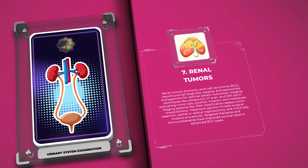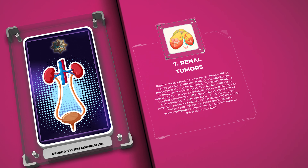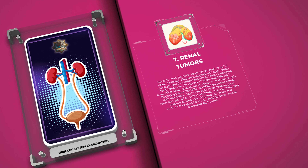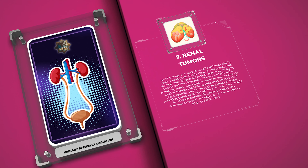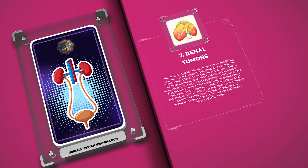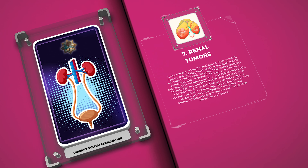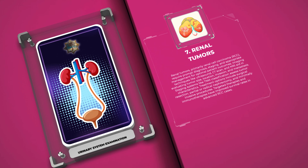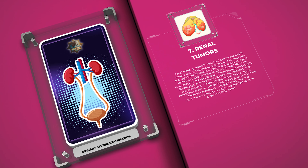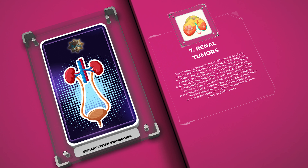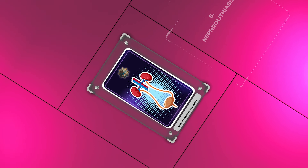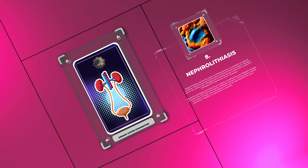Renal tumors, primarily renal cell carcinoma (RCC), require prompt diagnosis, staging, and appropriate management for optimal patient outcomes. Imaging techniques like ultrasound, CT scan, and MRI aid in evaluating tumor size, location, invasion, and metastasis. Staging systems like the TNM classification assess tumor characteristics. Treatment options include surgical resection, partial or radical nephrectomy, and minimally invasive procedures. Targeted therapies and immunotherapies have improved survival rates in advanced RCC cases.